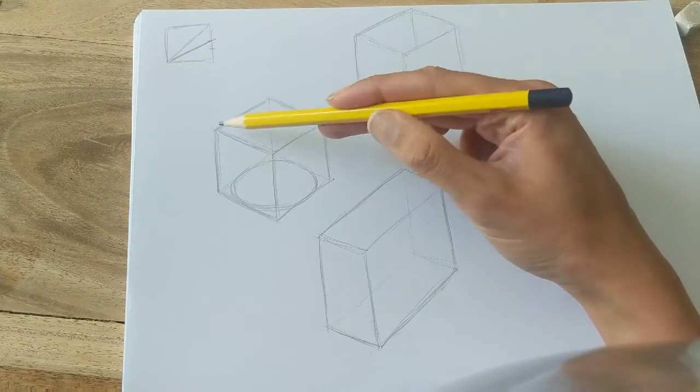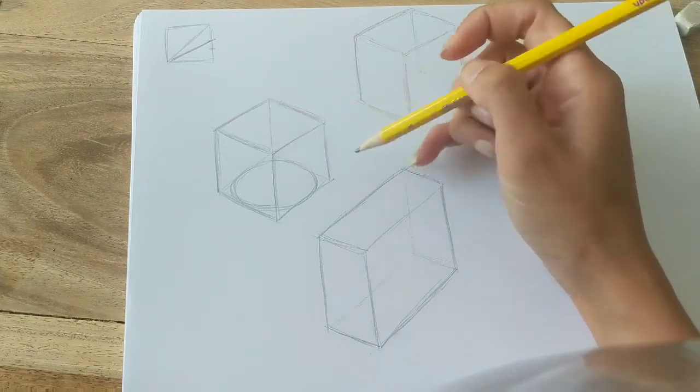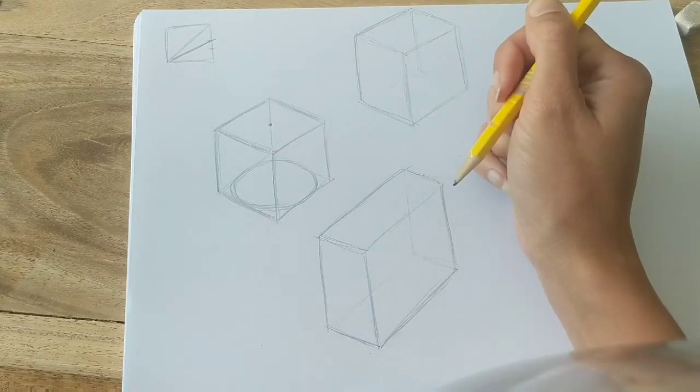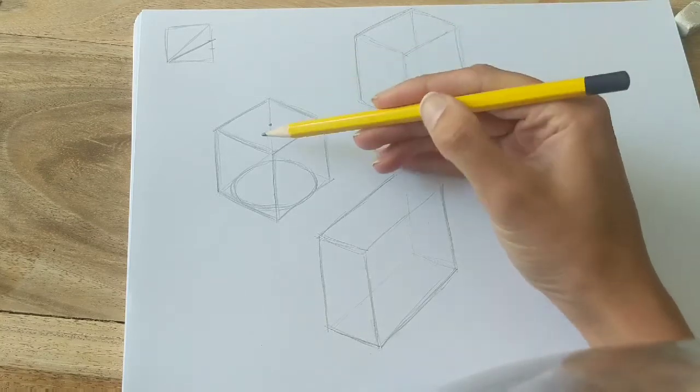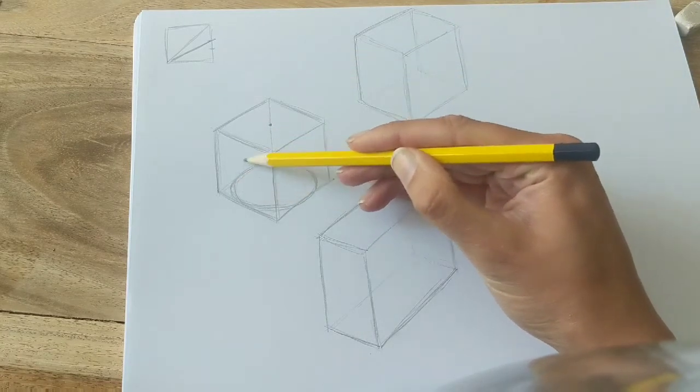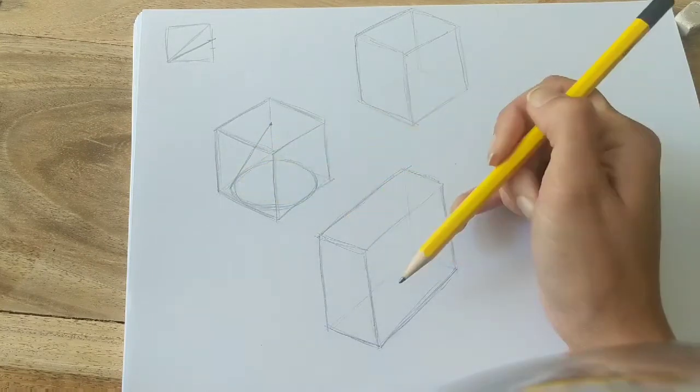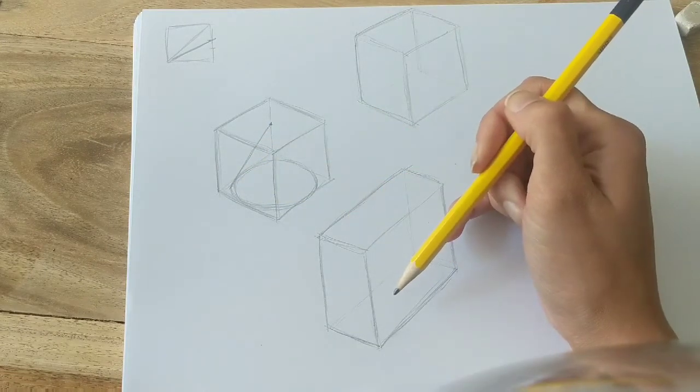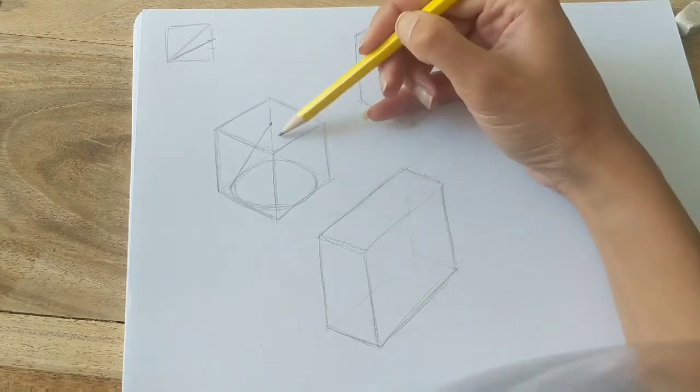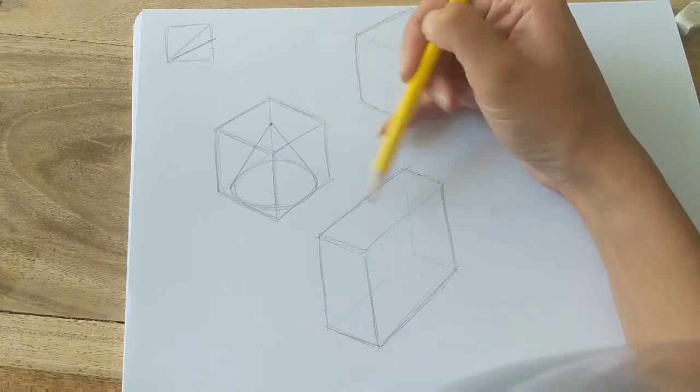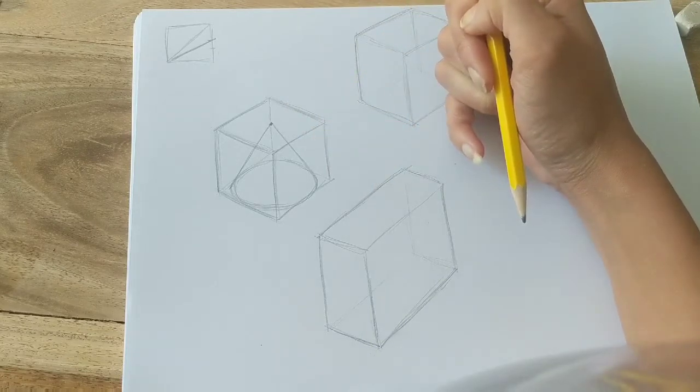If a cone was to come up to this top face, the point of it would be right in the center of that top face. So I'm then just joining the edges of my ellipse to that dot that I've drawn in the center of the top face. You're kind of imagining where the cone would be situated if it was inside that crate or that box.